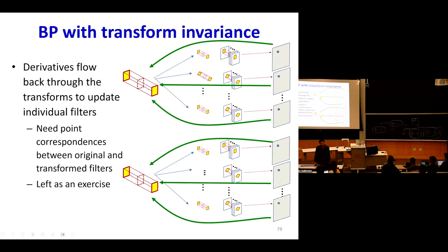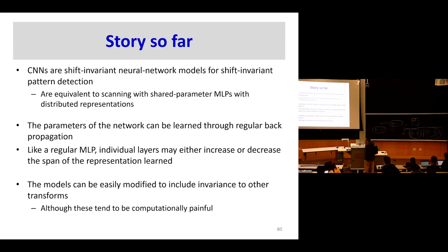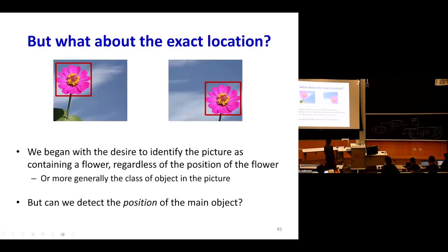CNNs are shift invariant neural network models. Parameters can be learned through regular backpropagation. Individual layers may increase or decrease the number of channels, similar to regular MLPs increasing or decreasing the span of representation. The models can be modified to include invariance to other transforms, but these tend to be computationally very painful.